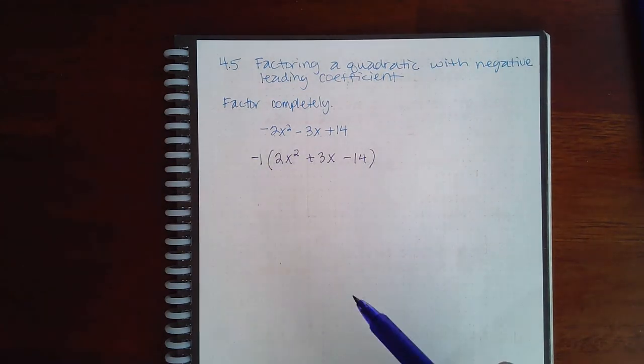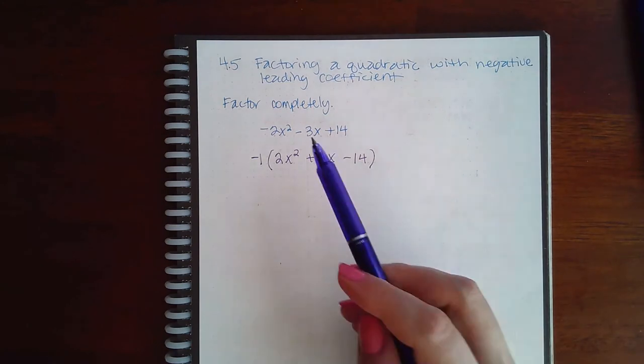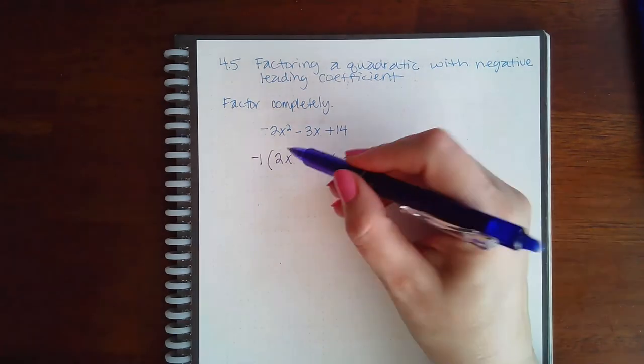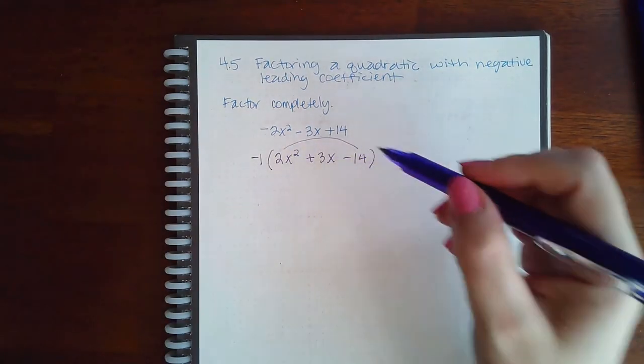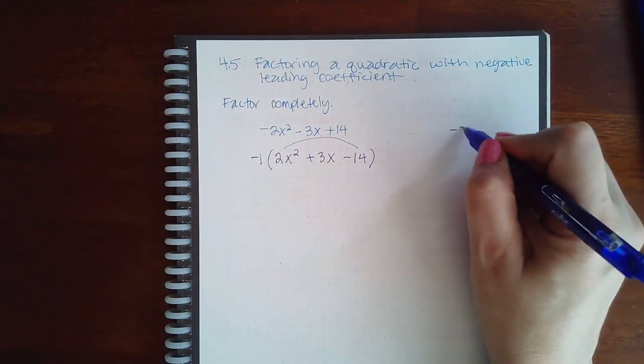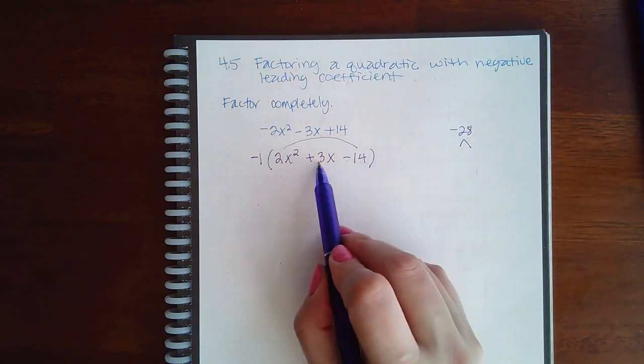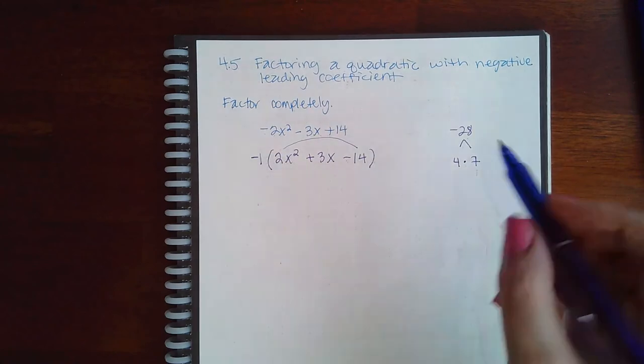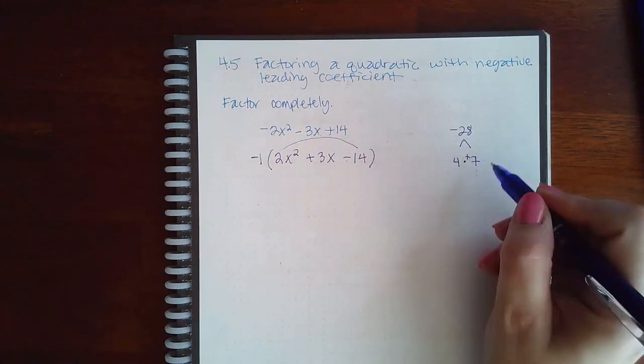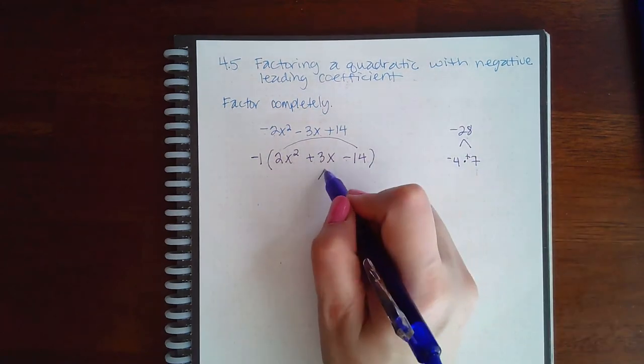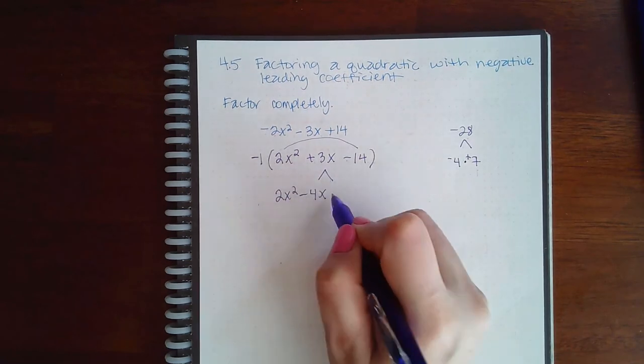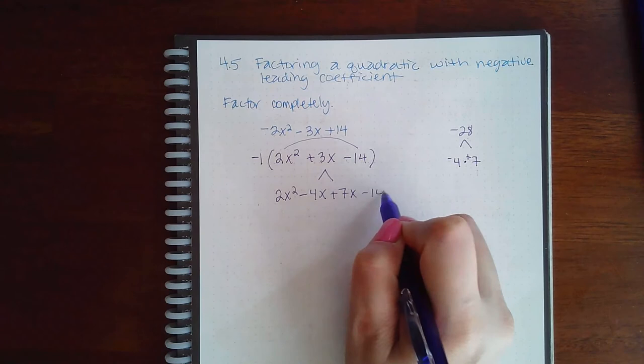Then I have to further finish to factor completely and factor this trinomial that's inside there. So 2 times negative 14 is negative 28. And then the factors that subtract to 3 would be 4 times 7, 3 having to be positive, so the bigger number will be positive. So then I can split this into 2x squared minus 4x plus 7x minus 14.